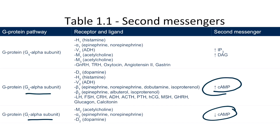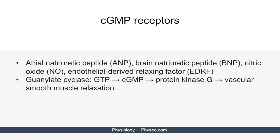Now let's talk about receptors associated with cyclic GMP. There are four ligands that regulate the cyclic GMP pathway. These include atrial natriuretic peptide, brain natriuretic peptide, nitric oxide, and endothelial derived relaxing factor. These ligands regulate the enzyme guanylate cyclase, which converts GTP into cyclic GMP, which then activates protein kinase G. Ultimately, the activation of guanylate cyclase results in vascular smooth muscle relaxation.